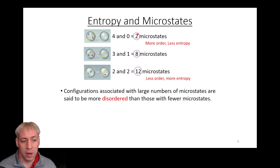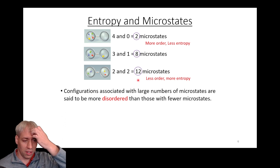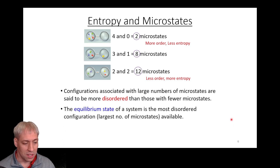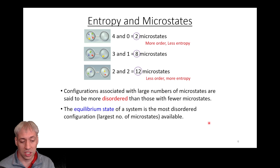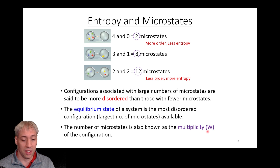The four-and-zero arrangement only has two microstates — this is the lowest probability scenario, the least disordered, and has the least entropy. On the other hand, the more likely arrangement is the 12-microstate condition. This is a less ordered system with more entropy — it's more disordered. You can think about which microstate is most favorable to exist: the 12-microstate one. The least favorable is the 4-and-0 arrangement, which has the least entropy. Typically when a system reaches equilibrium, it wants to go to the most disordered configuration, or the configuration that has the largest number of microstates available.